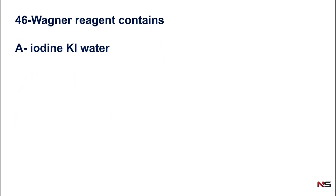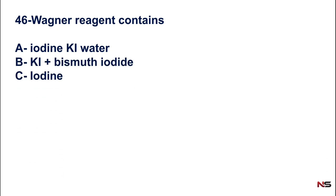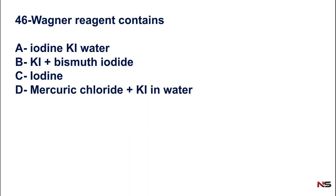Question 46: Wagner's reagent contains — option A) iodine potassium iodide water, B) potassium iodide bismuth iodide, C) iodine, D) mercuric chloride plus potassium iodide in water. The correct answer is option A — iodine, potassium iodide, and water. That is Wagner's reagent.